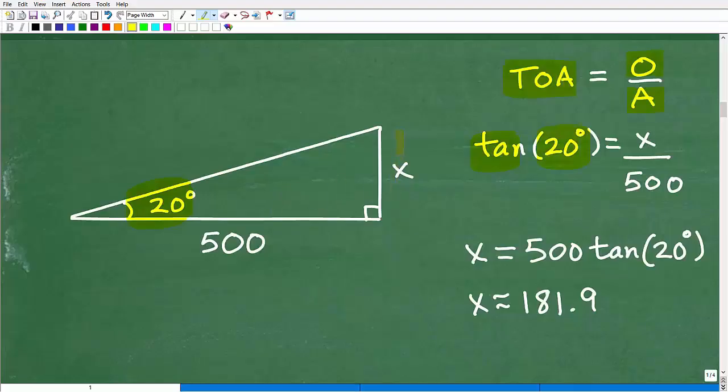So the tangent of 20 degrees is equal to its opposite side. In this case, it's X. This is the opposite over the adjacent. And the adjacent side is 500. Okay? So this is, by definition, the opposite over the adjacent. So tangent of 20 degrees is opposite over adjacent or here, X over 500. So you've got to understand this setup here.